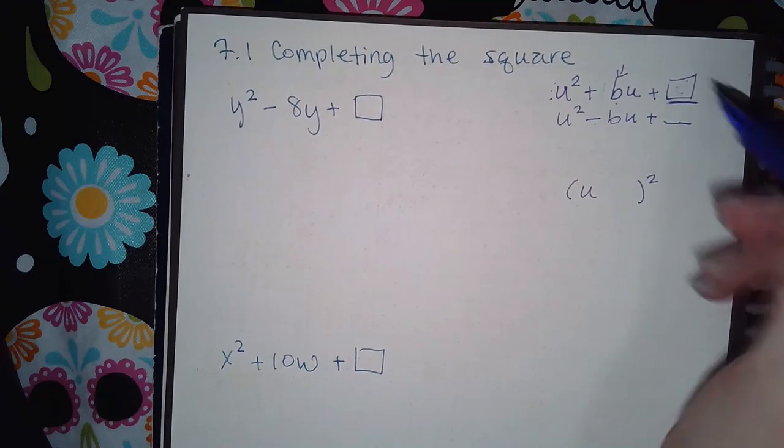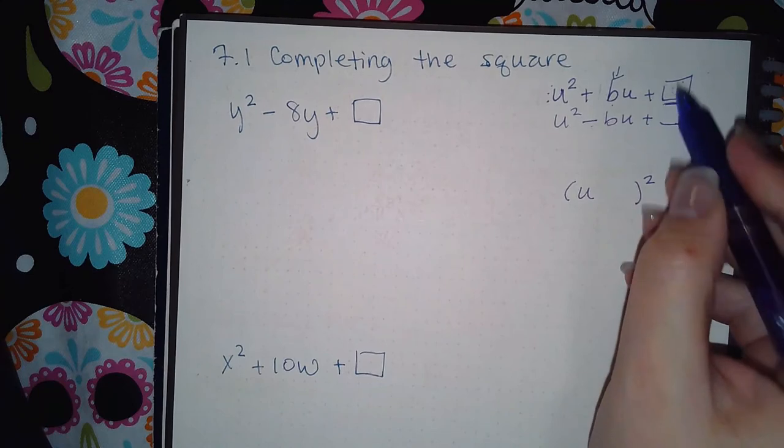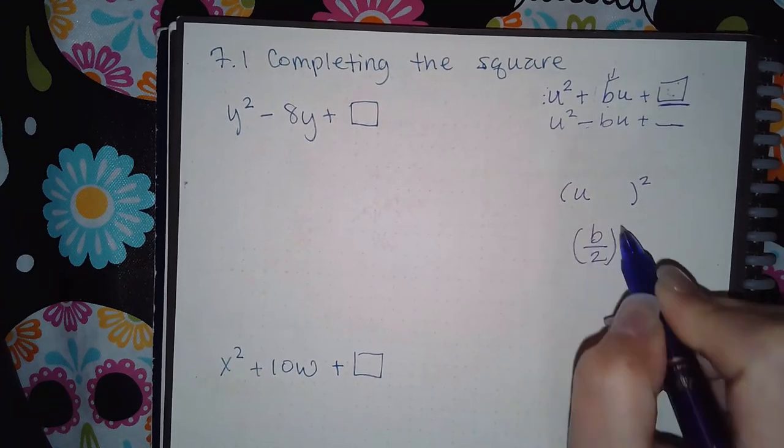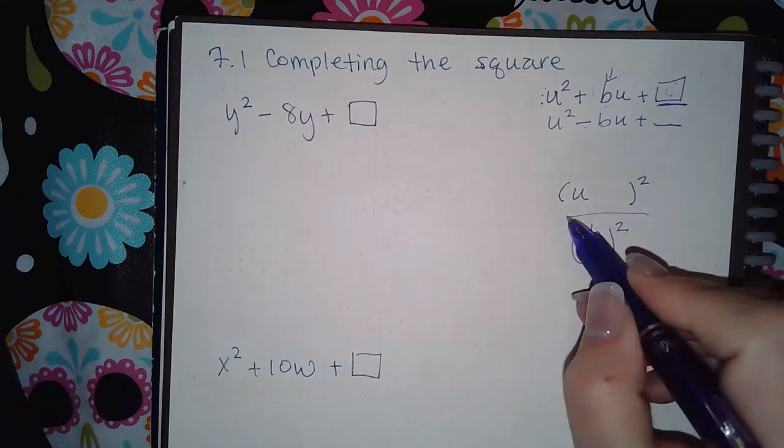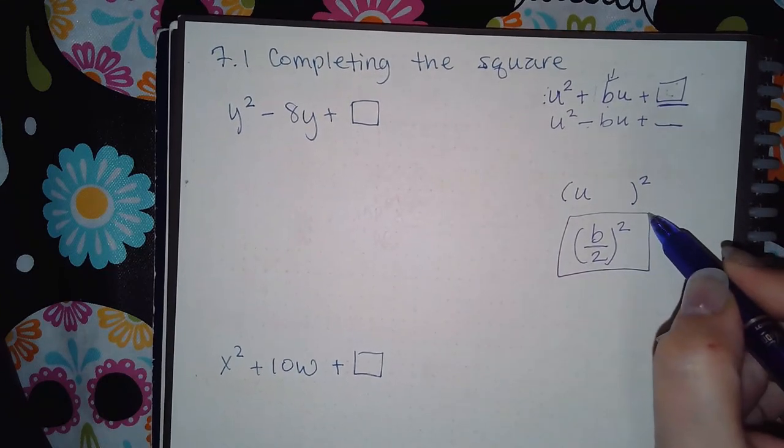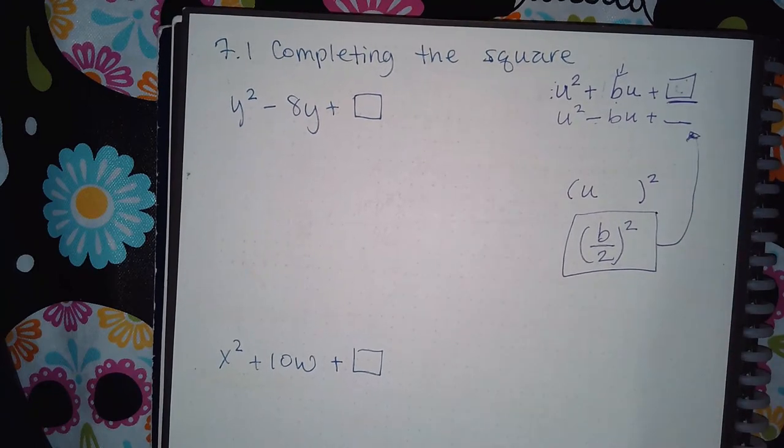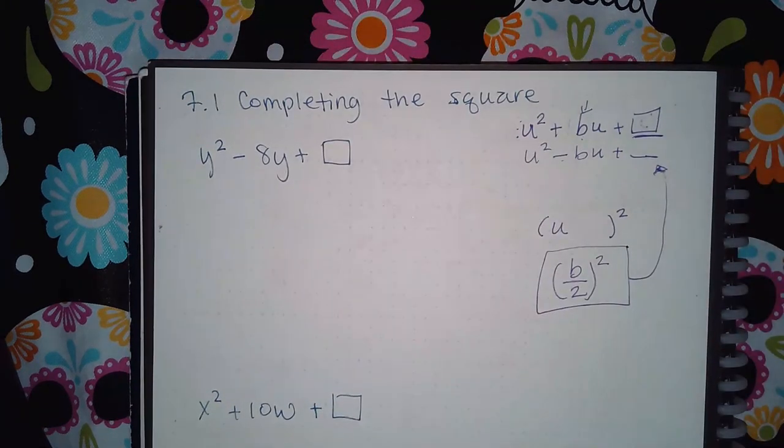So you have to identify B. How do I figure out what number to add here? You take B over 2 and you square it. This is what completes the square. So this is the number you add at the end of the trinomial, or to make it a trinomial, so that it will factor as a perfect square.